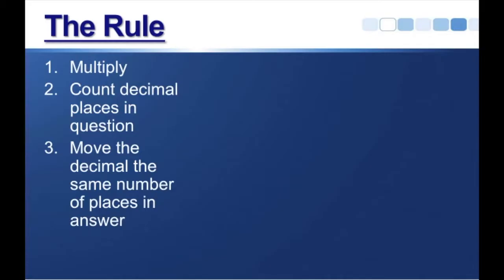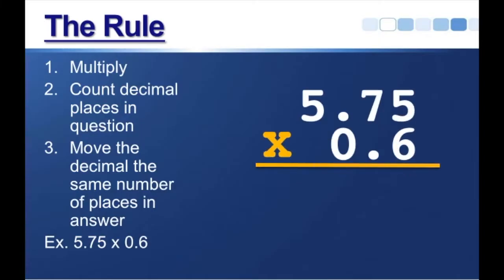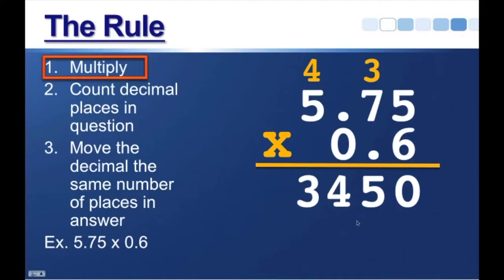So let's take an example. Let's say we have 5.75 times 0.6. So our first step is to multiply. We've got 6 times 5, and that's going to be 30. Bring down the 0, carry the 3. We've got 6 times 7, that's going to be 42, plus 3 is 45. Bring down the 5, carry the 4. And we've got 6 times 5, which is going to be 30. 30 plus 4 is 34. So we have our numbers here.